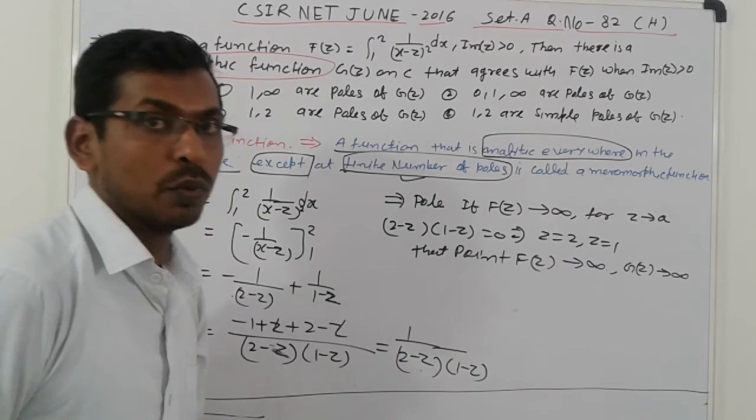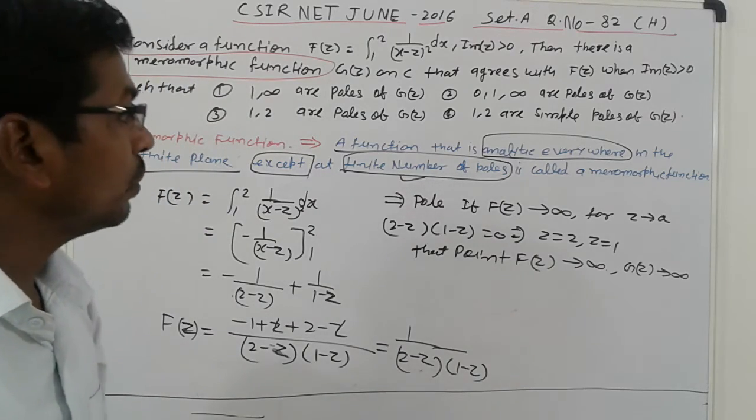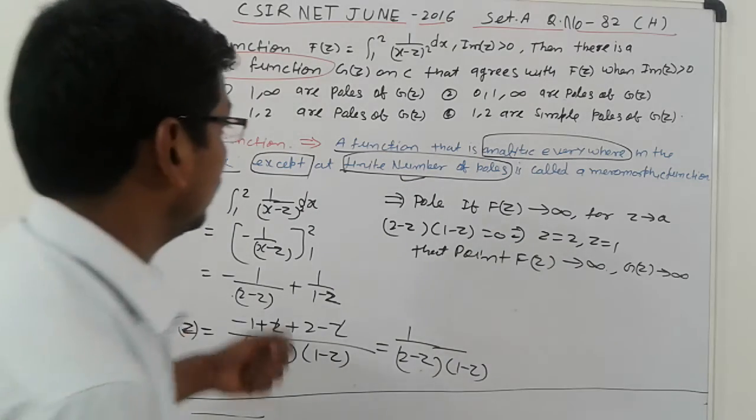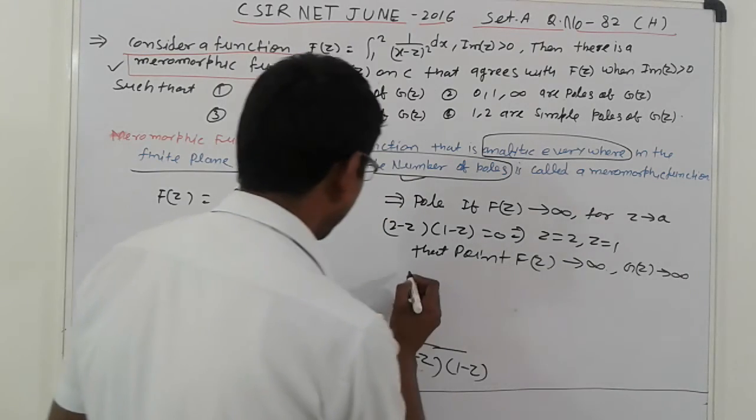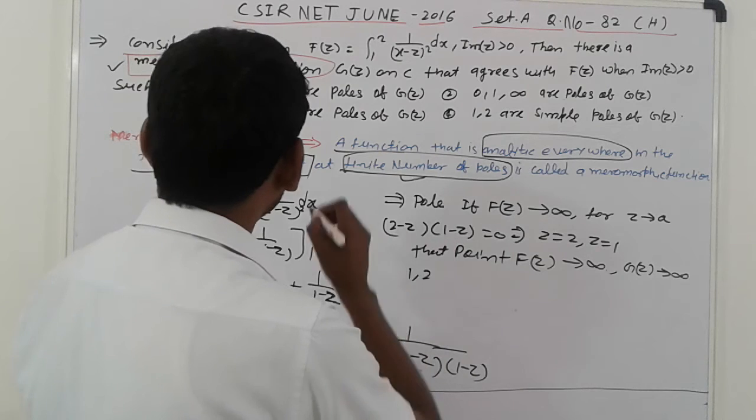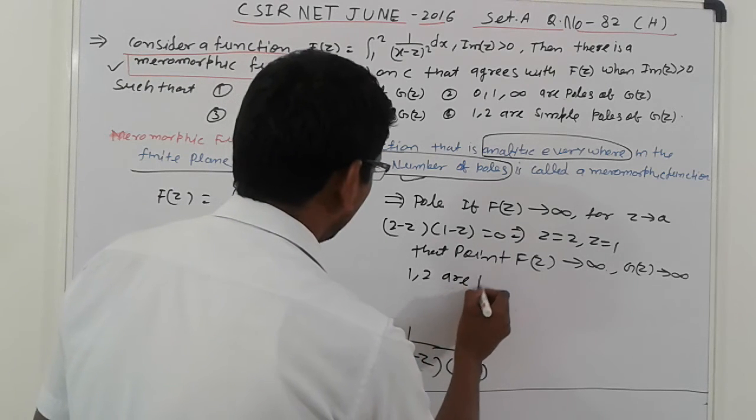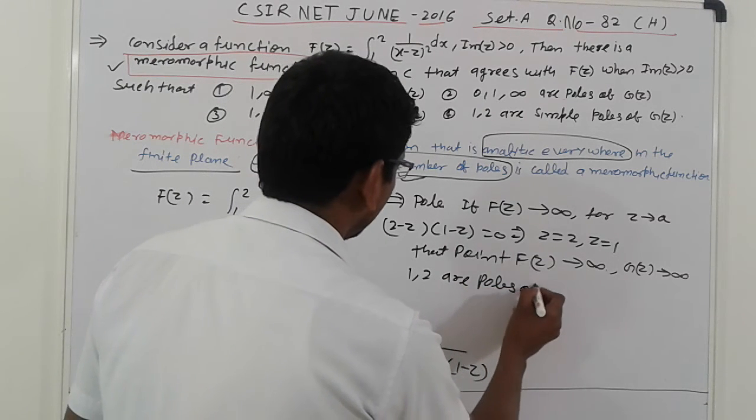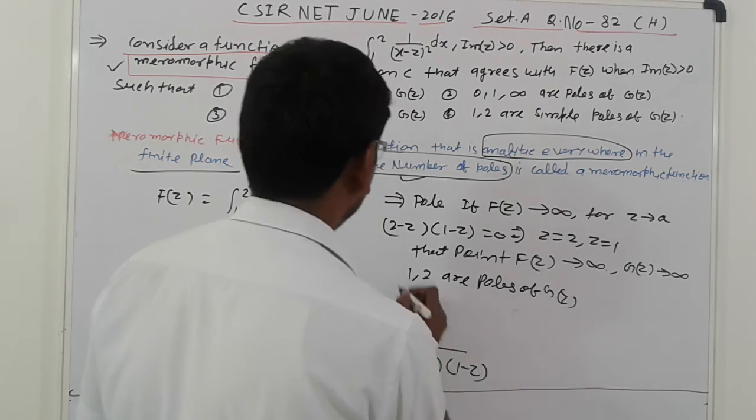So, it means one and two are poles. Poles is represented. It means one and two are poles of f of z. First.